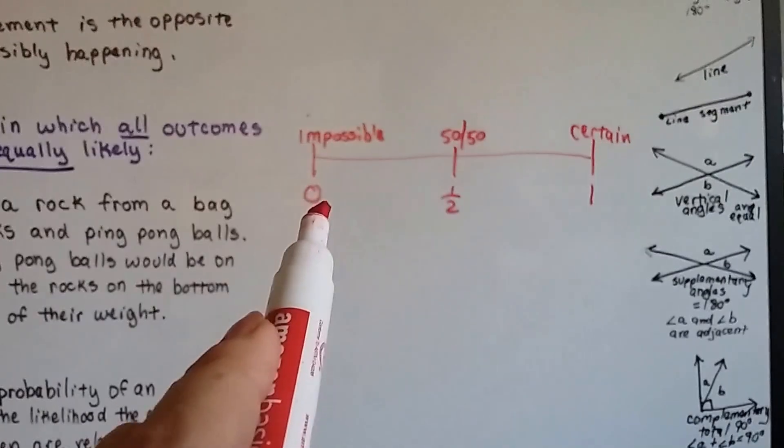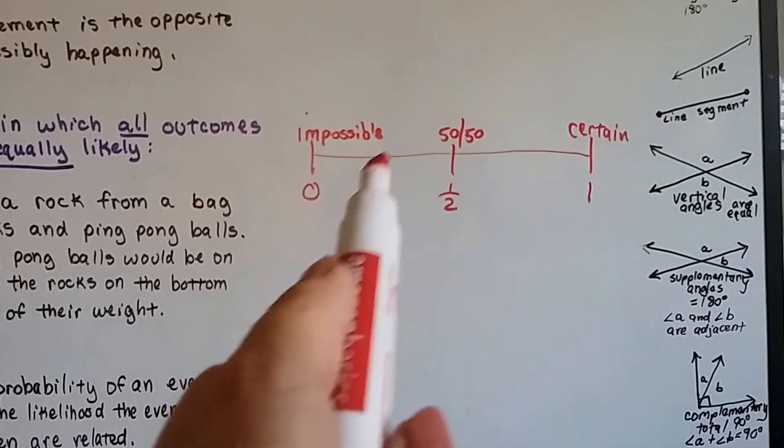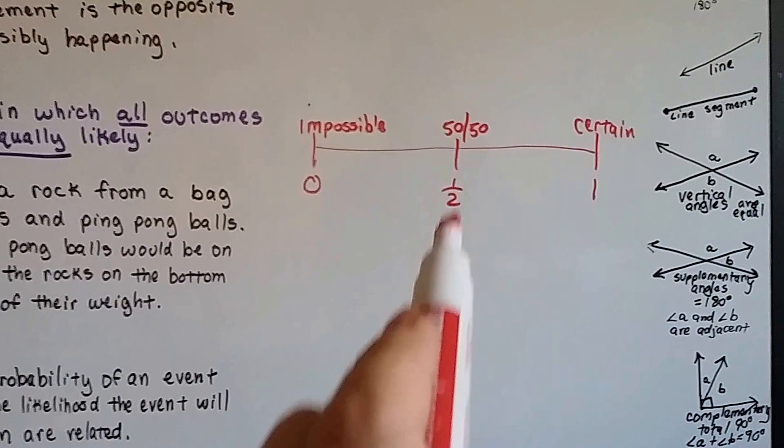If it's not going to happen, it's zero. If it's certainly going to happen, it's one. Right here would be unlikely, and here would be likely. And here, it could happen or not happen equally.